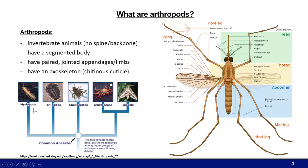There are five major groups of arthropods: Myriapods, which are centipedes and millipedes; Trilobites, which are an extinct marine arthropod group; Chelicerates, which includes spiders and ticks; Crustaceans, which are, for example, shrimp, lobster, or crabs; and then insects, which include flies, mosquitoes, moths, true bugs, and so on. Arthropods really are incredibly diverse and among the most complex invertebrates.